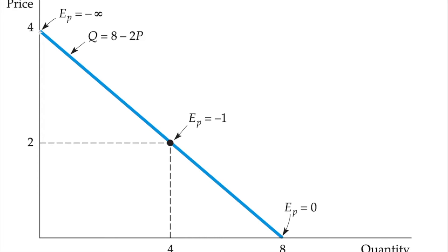Here we have an infinitely elastic demand at the point where P = 4. At the point where P = 2 and quantity demanded equals 4, the elasticity will be −2 × (2/4) = −1. At the point where price equals 0 and quantity demanded is 8, the elasticity is −2 × (0/8) = 0. It is clear that price elasticity of demand depends not only on the slope of the demand curve but also on the price and quantity.